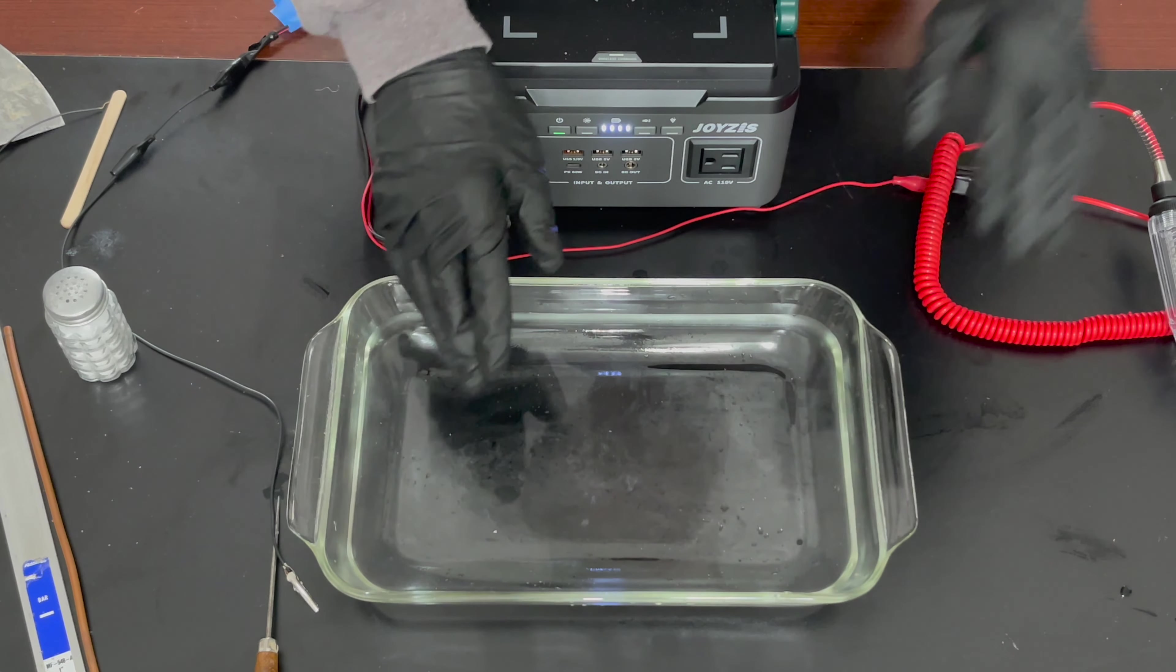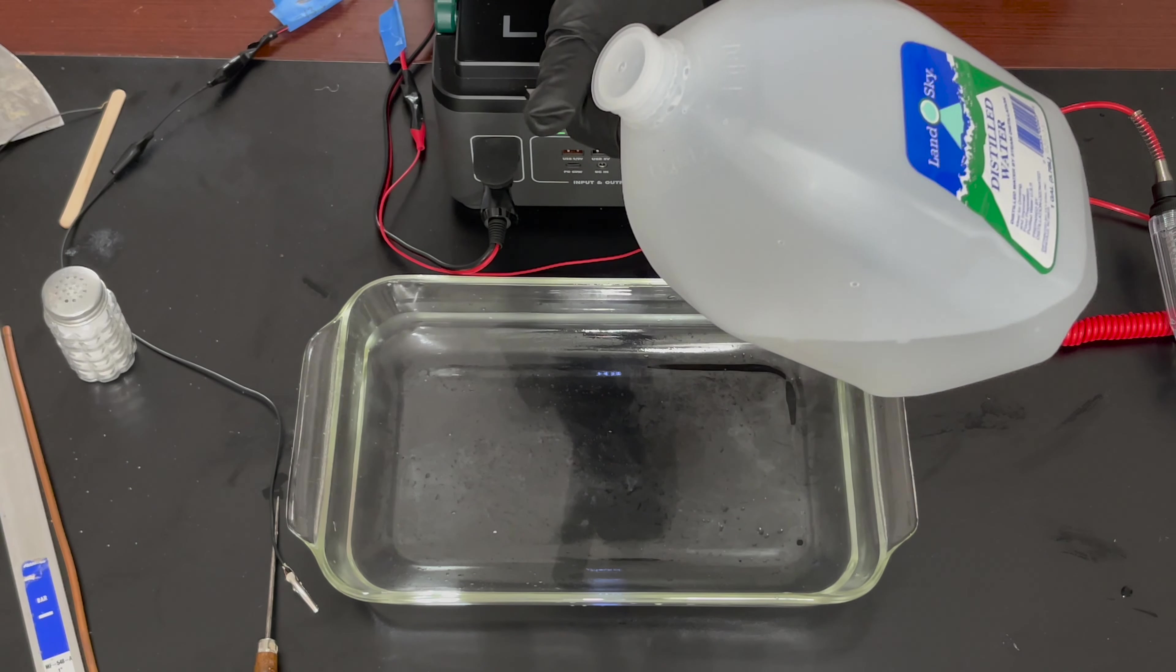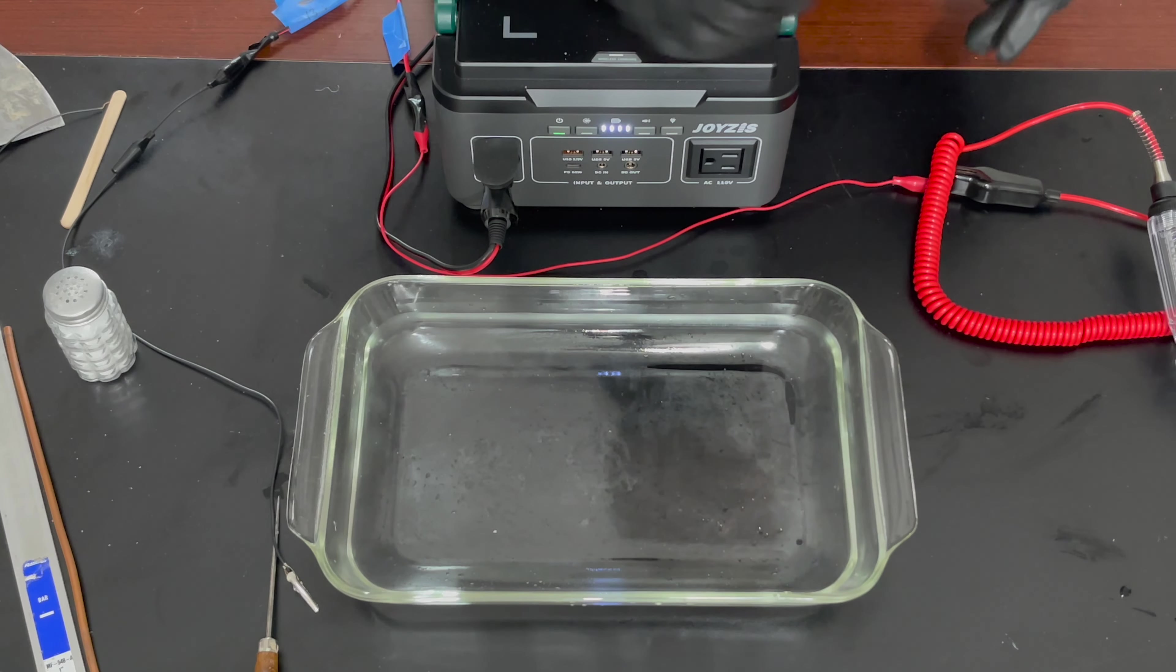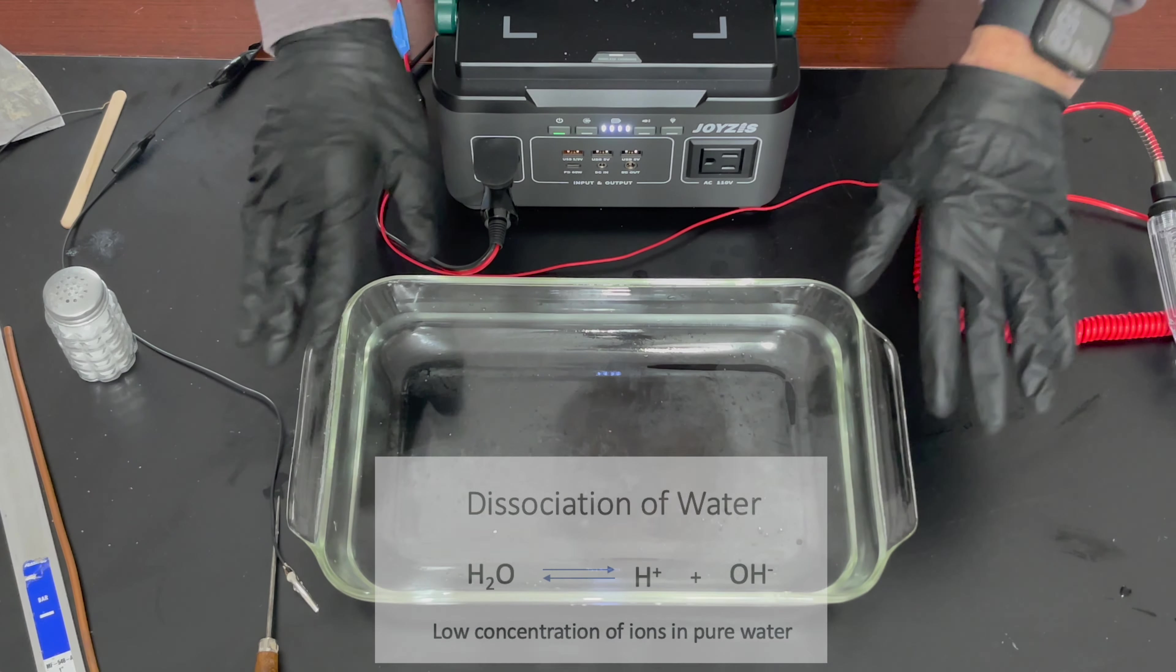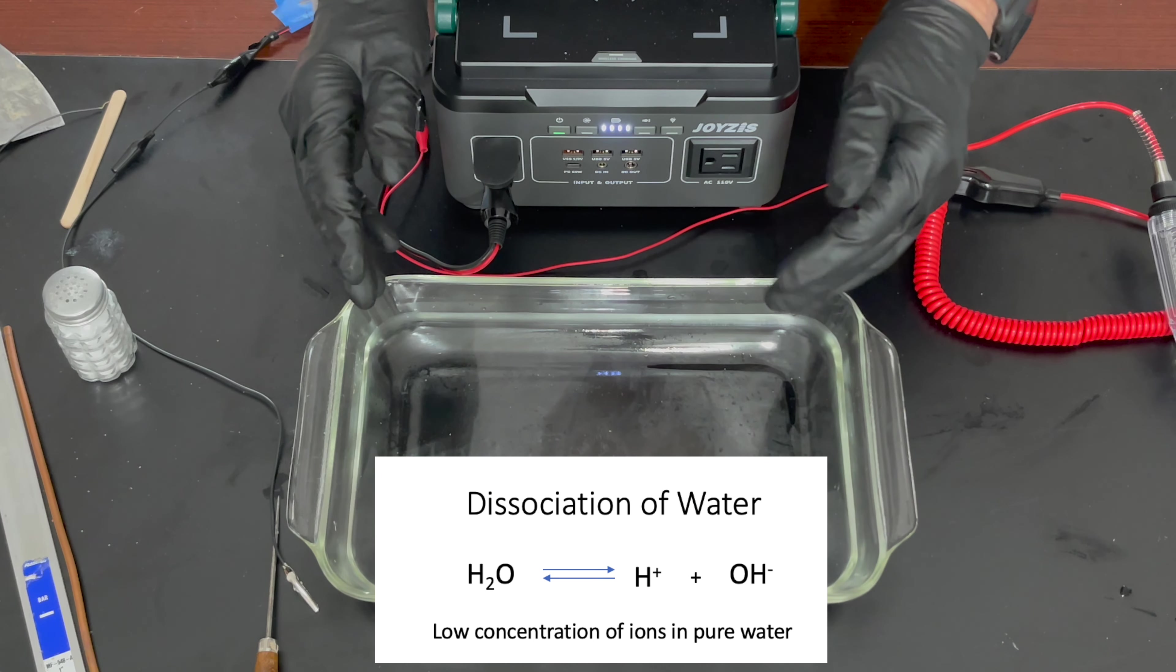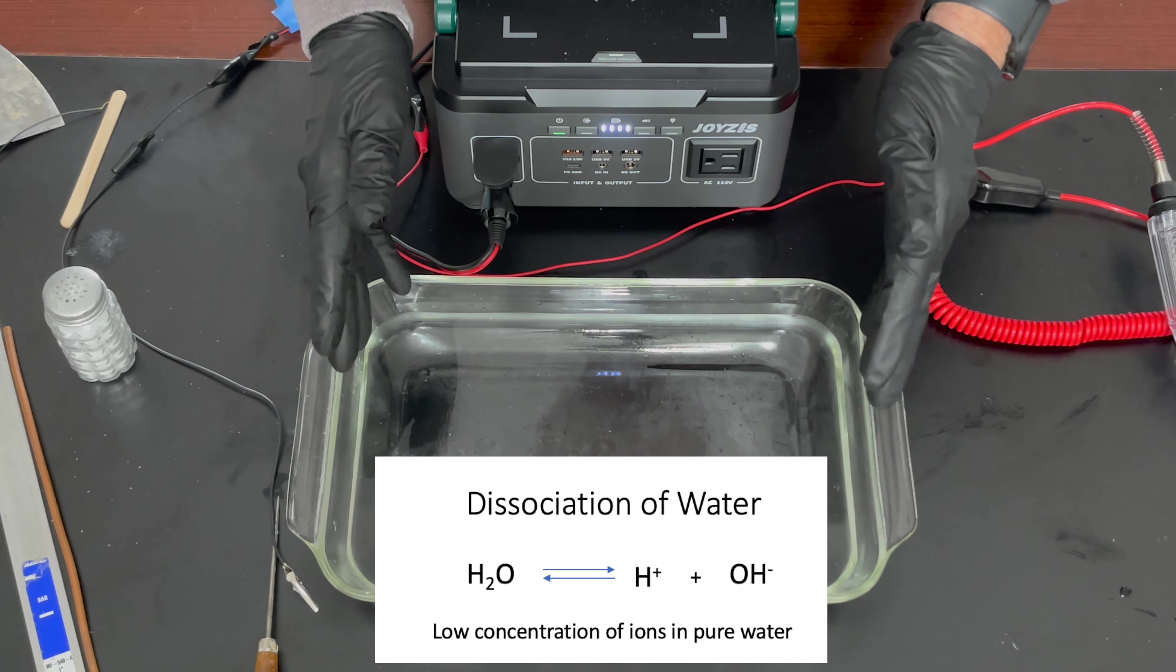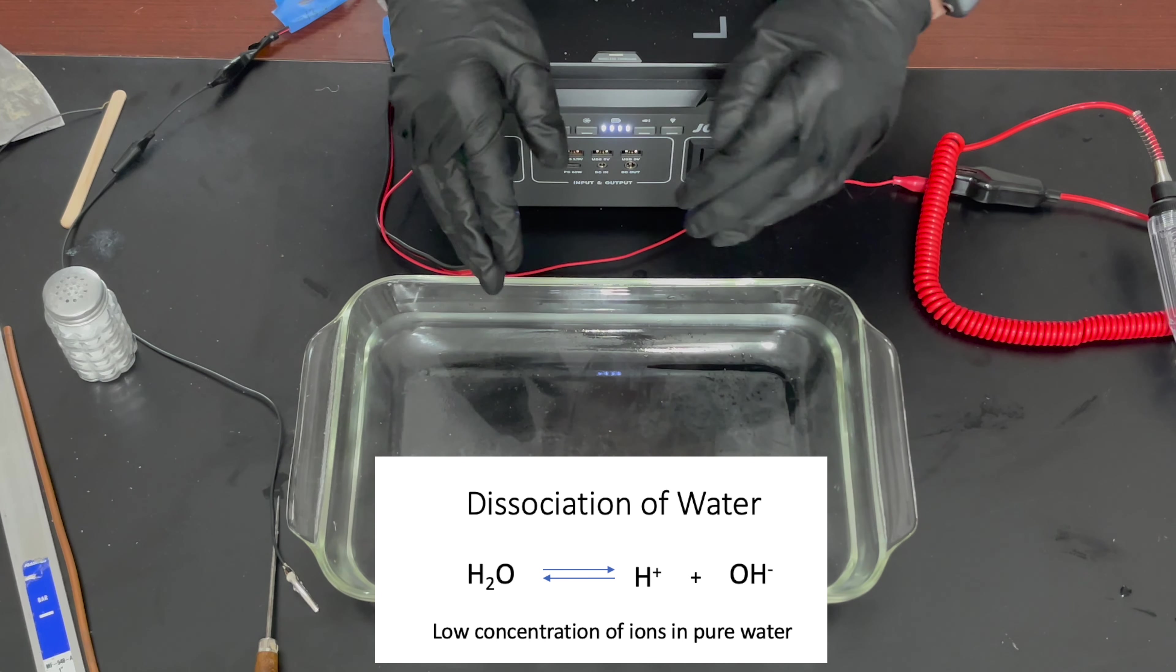And in pure water, this is distilled water, just a jug I bought from the grocery store. It's probably not super pure, but it should be better than tap water. Water doesn't have many ions in it. The level of hydrogen ions, H+, and hydroxide ions, OH-, are very, very low. So, it's not very conductive.